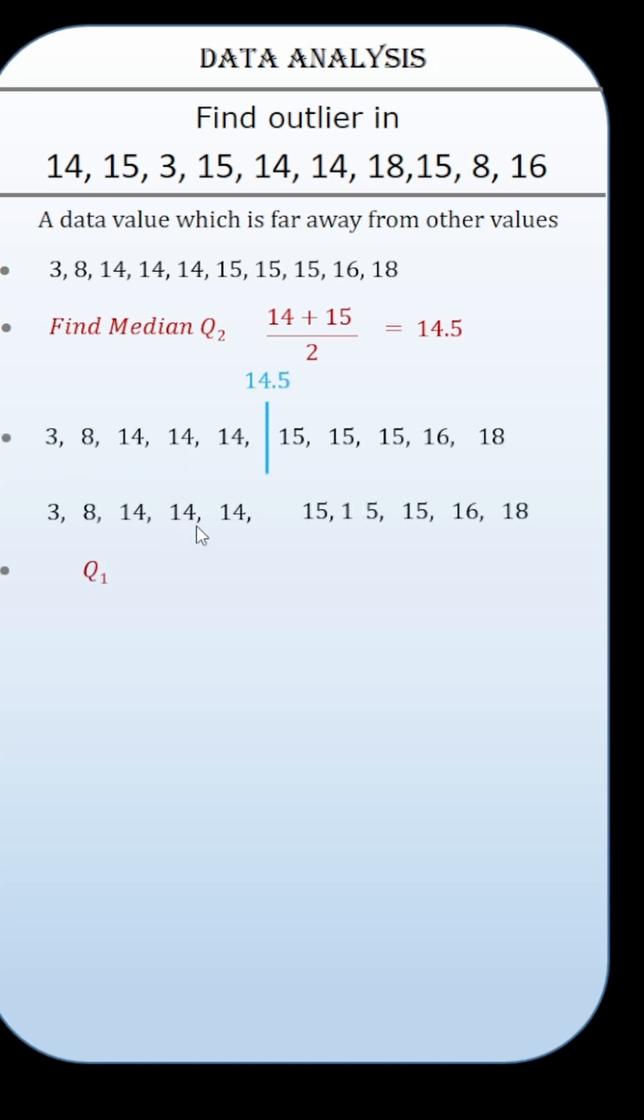Find median for lower and upper half of data. Median of lower half is quartile Q1 and median of upper half is quartile Q3. Find the interquartile range IQR by subtracting Q1 from Q3.